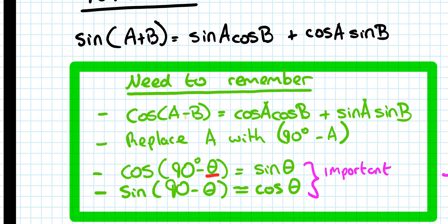So as with the previous two videos, we start off with cos A minus B or something very similar, we replace A with 90 minus A.